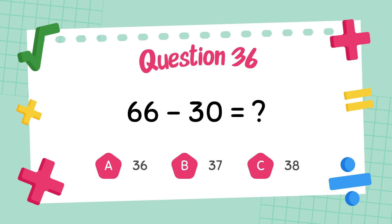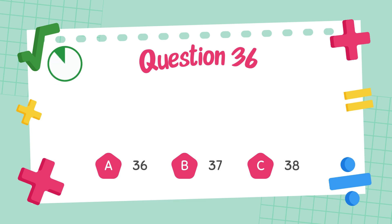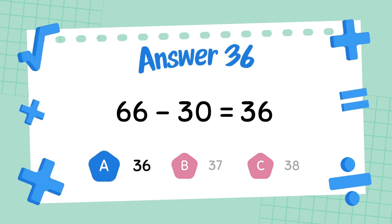What is sixty-nine minus forty-nine? The answer is thirty-six.